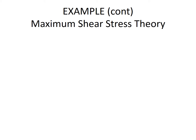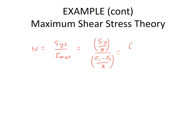For the maximum shear stress theory, N equals yield strength in shear divided by maximum shear stress. The yield strength in shear equals yield strength divided by 2, and maximum shear stress equals sigma 1 minus sigma 3 divided by 2. The 2's cancel, leaving 60 ksi divided by the quantity 20 ksi minus negative 25 ksi, giving a factor of safety N equal to 1.3.